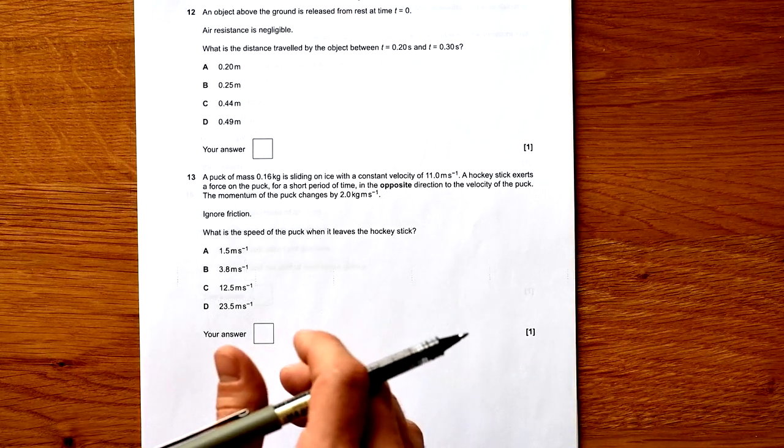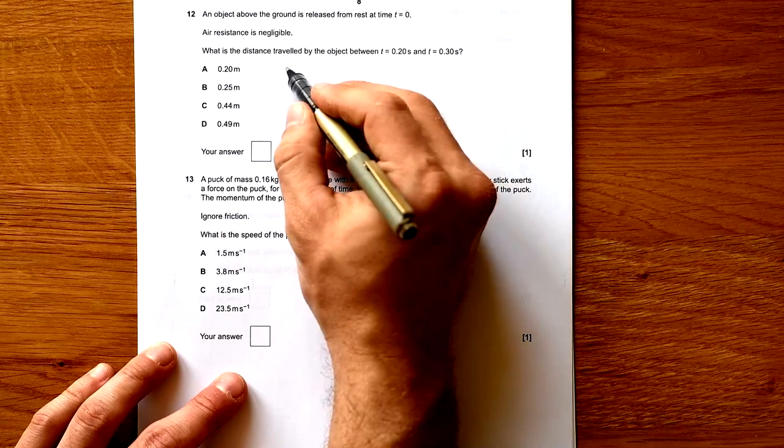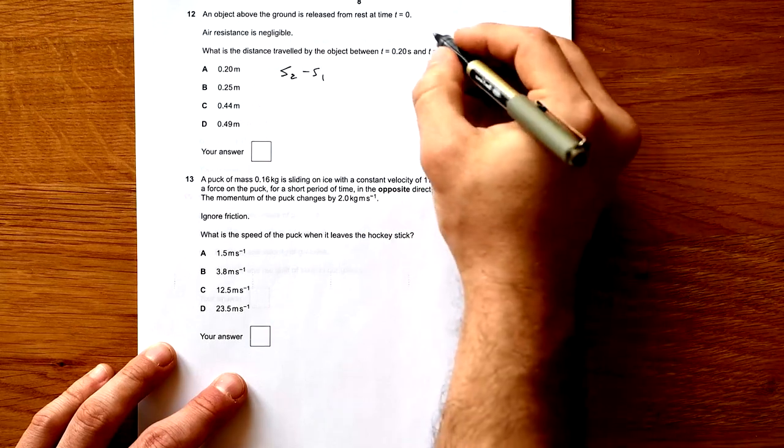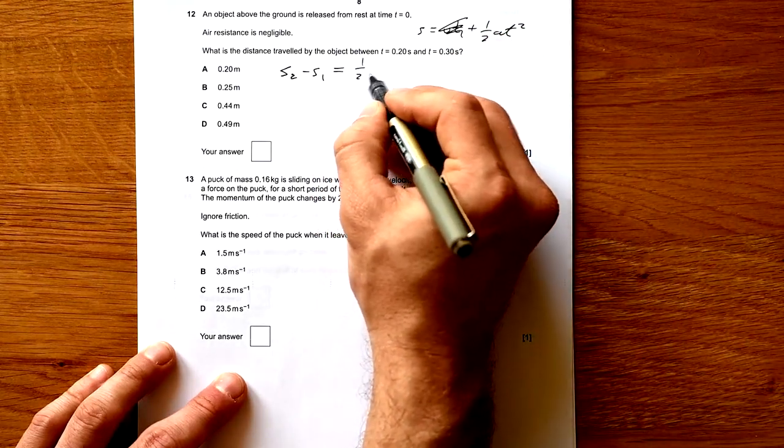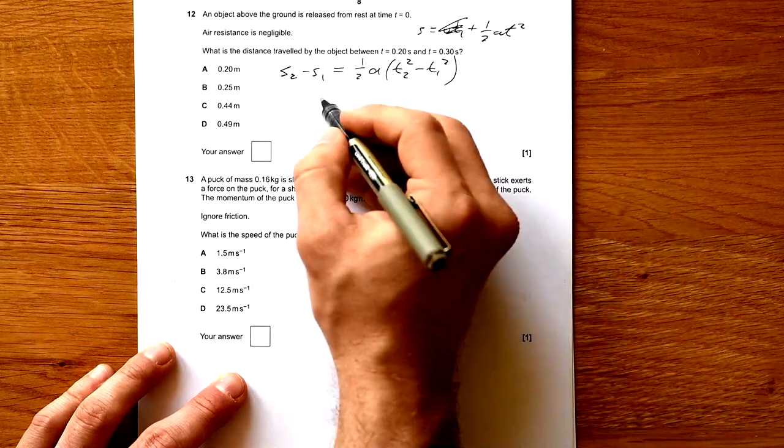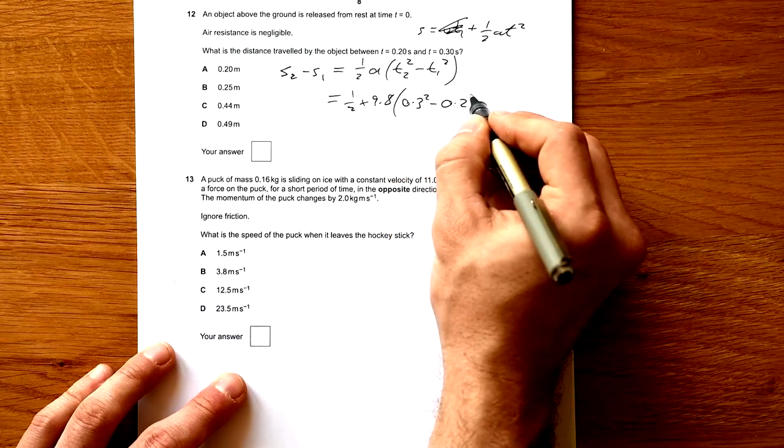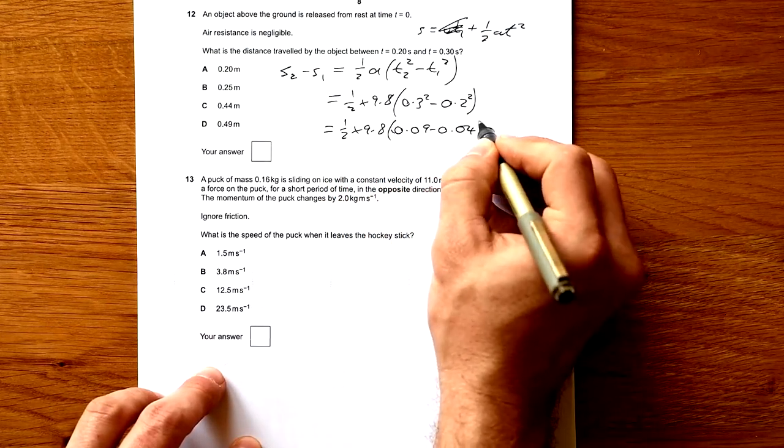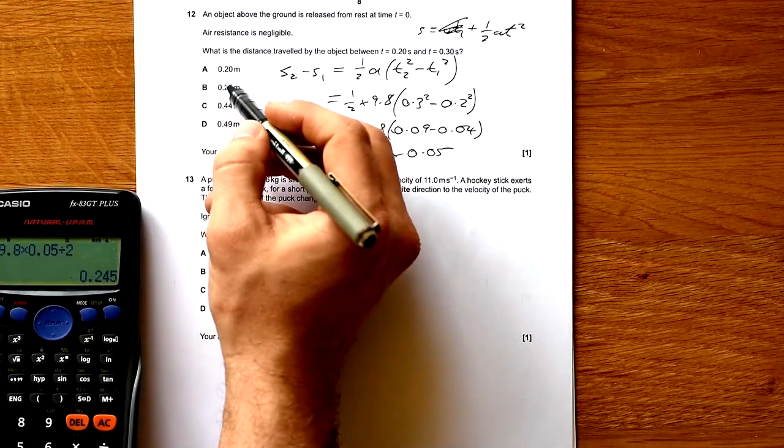Question 12: An object above the ground is released from rest. What is the distance traveled between 0.2 and 0.3 seconds? We're looking for S2 take away S1. We're going to be using S equals UT plus half AT squared. We know that UT disappears. So we're looking for half A times T2 squared take away T1 squared. Half times 9.8 times 0.3 squared minus 0.2 squared. That's half times 9.8 times 0.09 take away 0.04. Half 9.8 times 0.05. That gives us 0.245 meters.